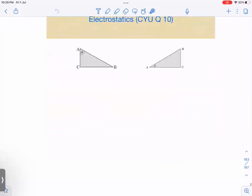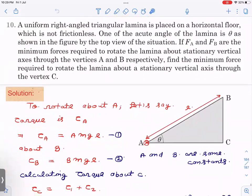Let us start with the first question. There's a uniform right-angled triangular lamina placed on a horizontal surface which is not frictionless. One of the acute angles of the lamina is theta as shown in the figure by the top view of the situation. FA and FB are the minimum forces required to rotate the lamina about stationary vertical axes through vertices A and B.